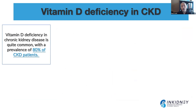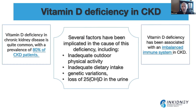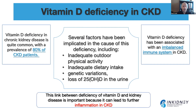Vitamin D deficiency is very common in chronic kidney disease. Some studies show the prevalence of vitamin D deficiency in CKD is up to 80%. There are several reasons, including inadequate outdoor activity, inadequate dietary intake, genetic variants, and loss of 25-hydroxyvitamin D in the urine. Vitamin D deficiency has been associated with an imbalanced immune system in chronic kidney disease, and there is a clear link between vitamin D deficiency and inflammation in CKD.